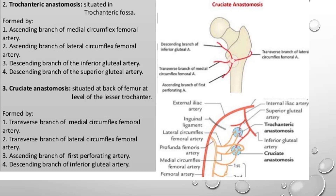The trochanteric anastomosis is situated in the trochanteric fossa and is formed by four arteries. The femoral artery gives the profunda femoris artery, also called the deep artery of the thigh, which then gives two branches: the medial circumflex femoral and lateral circumflex femoral arteries. These give ascending branches contributing to the trochanteric anastomosis.